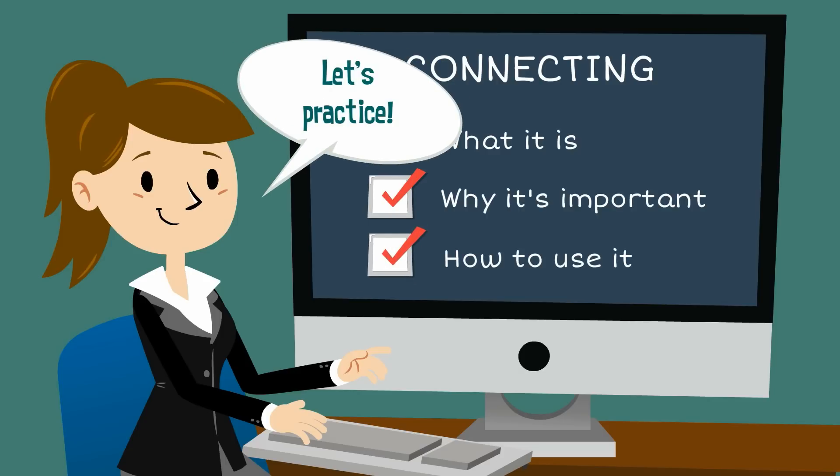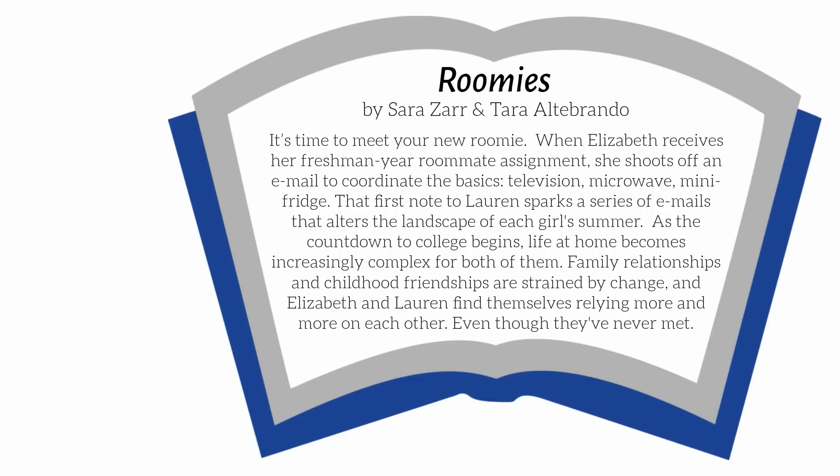Look at the summary for the book Roomies by Sarah Zarr and Tara Altebrando and see if we can make any connections. It's time to meet your new roomie. When Elizabeth receives her freshman year roommate assignment, she shoots off an email to coordinate the basics: television, microwave, mini fridge. That first note to Lauren sparks a series of emails that alters the landscape of each girl's summer. As the countdown to college begins, life at home becomes increasingly complex for both of them. Family relationships and childhood friendships are strained by change, and Elizabeth and Lauren find themselves relying more and more on each other, even though they've never met.